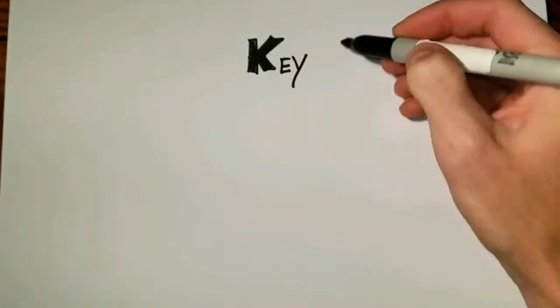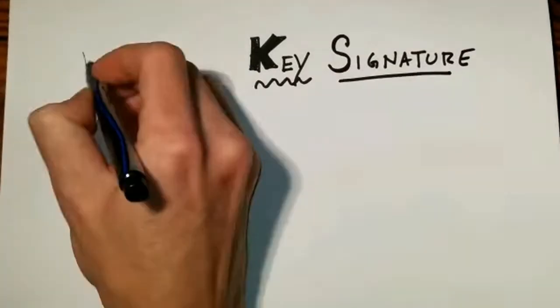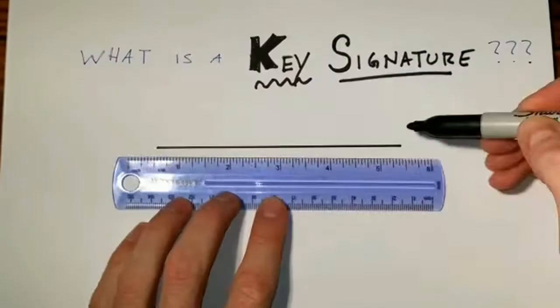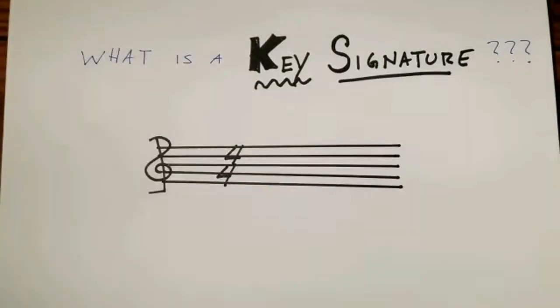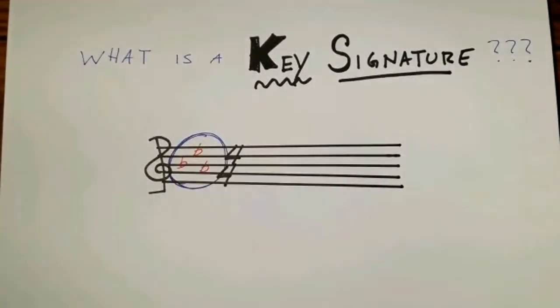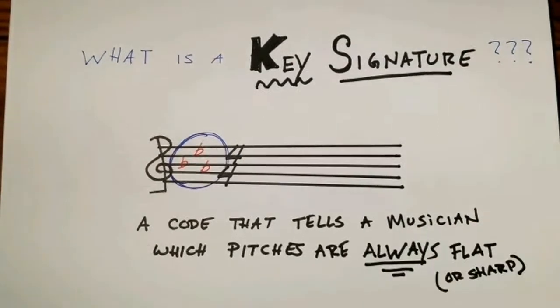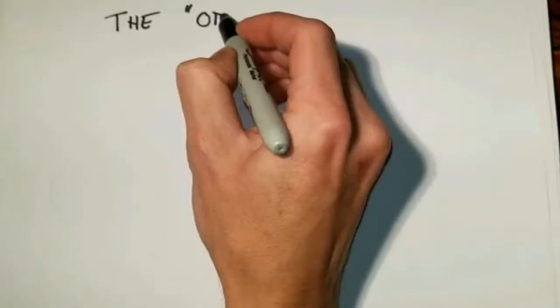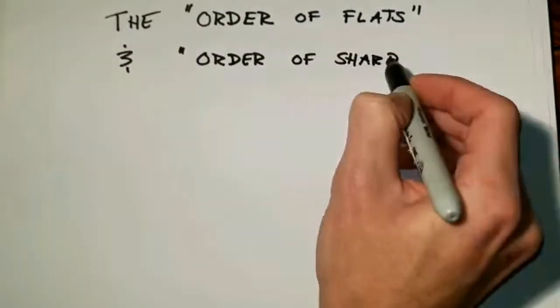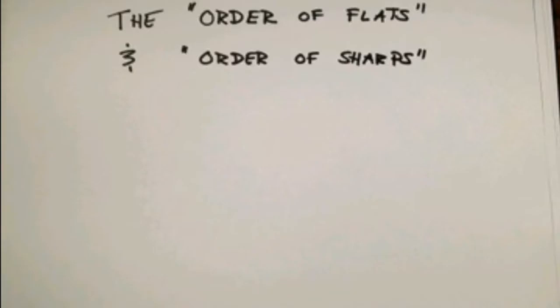In this unit, we are starting to work on our key signatures, and the first thing that we have to ask ourselves is, what is a key signature? A key signature is found on the staff, before the time signature and after the clef, and it tells us which notes are always flat or sharp. The nice thing about key signatures is that the flats and sharps in them always appear in the same order, so it brings us to our first rule of music theory, the order of flats and the order of sharps.